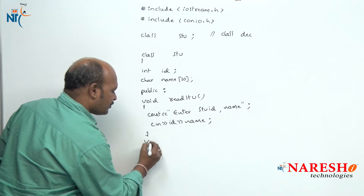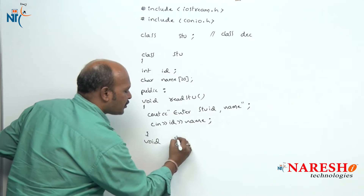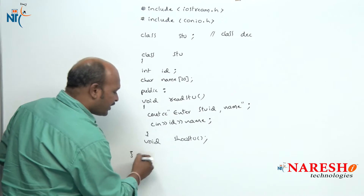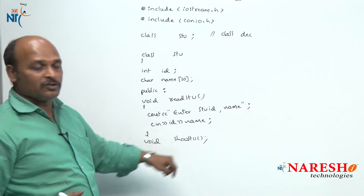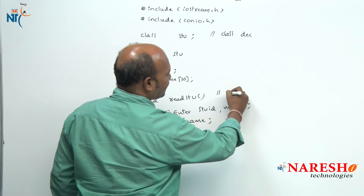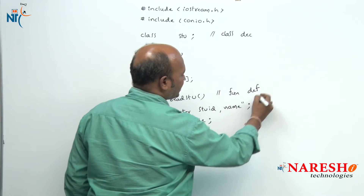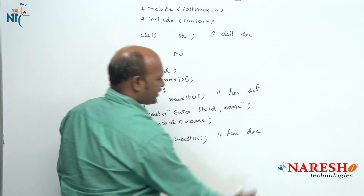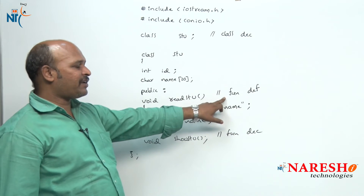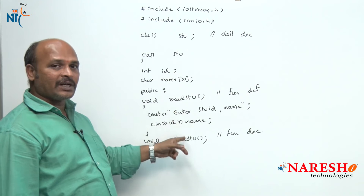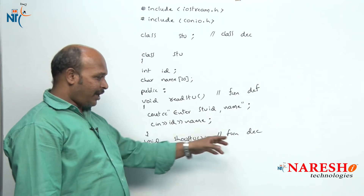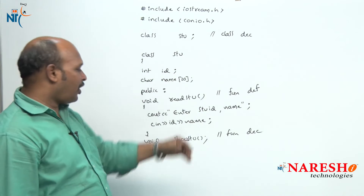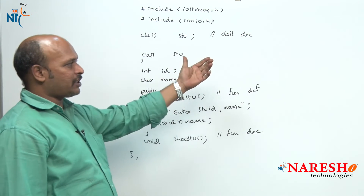Next, another function: void show_student — I want to display the student data. Here a semicolon means it is a function declaration only. So read_student's definition is completed within the class, but show_student is only declared — I want to conduct its function definition outside the class. Now, how do we conduct the function definition outside the class?